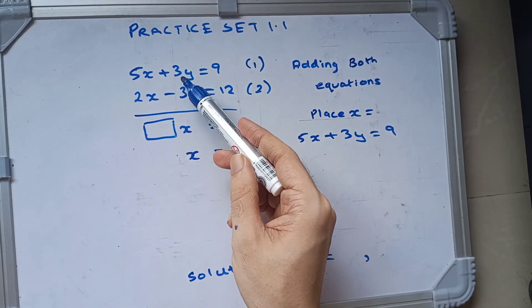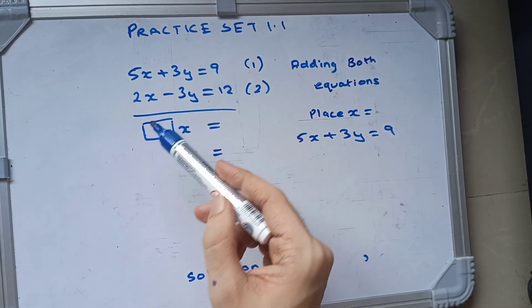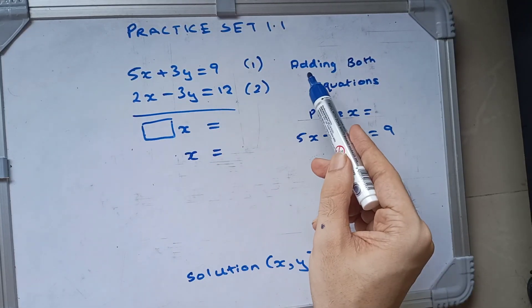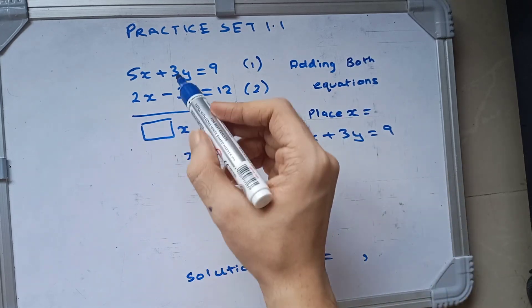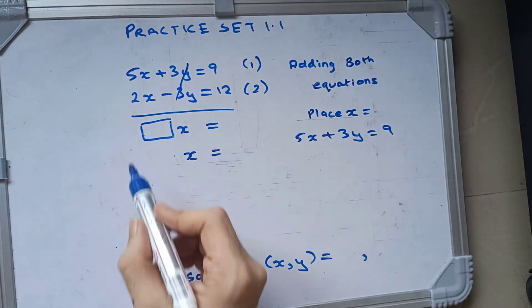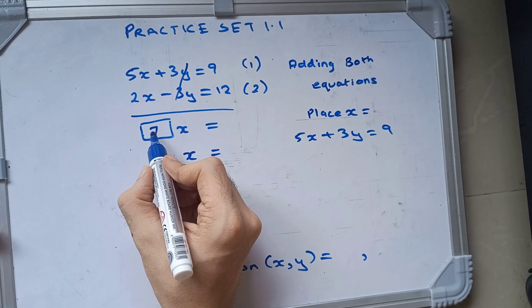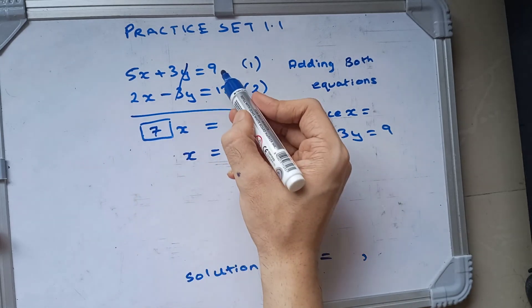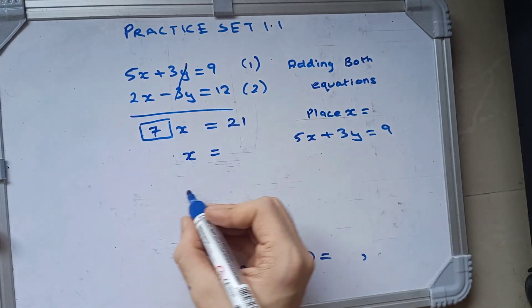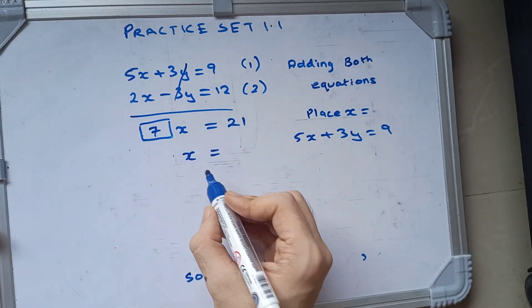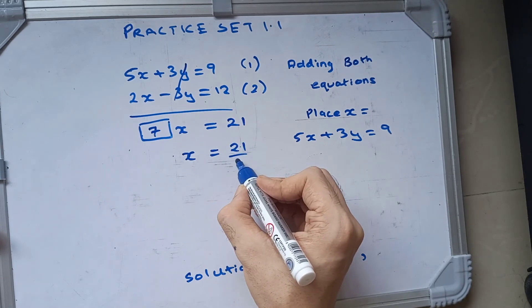As you can see, here are two equations. If we add them, then minus 3 and plus 3 will be cut. If we add this, it will be cut. Once it is cut, this adds up to 7, and this adds up to 21. So we will get 7x is equal to 21.